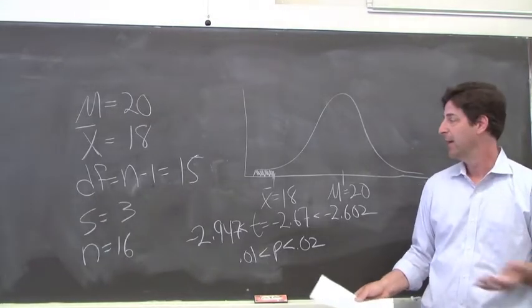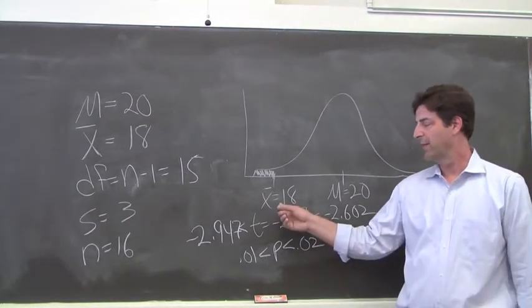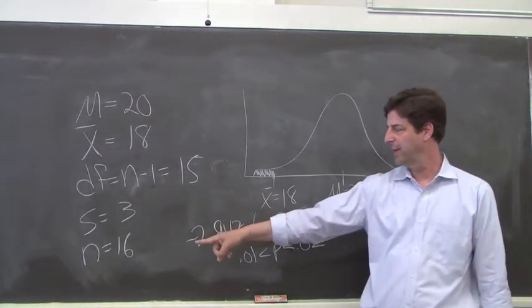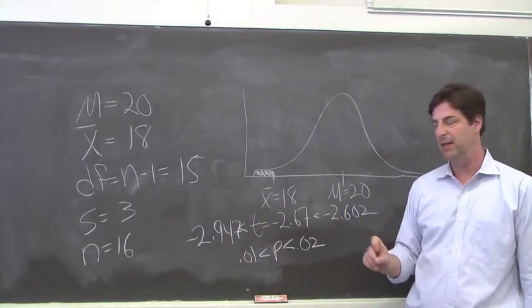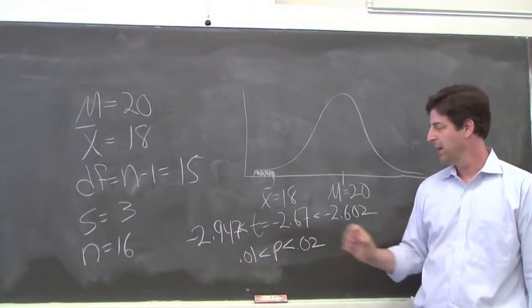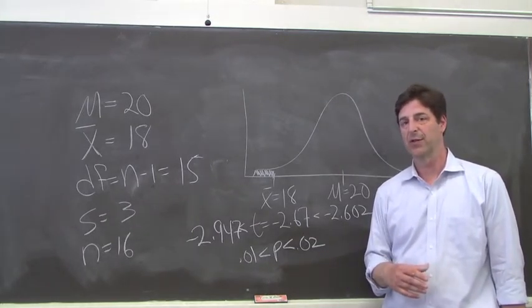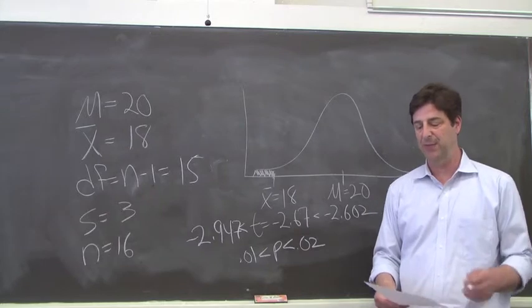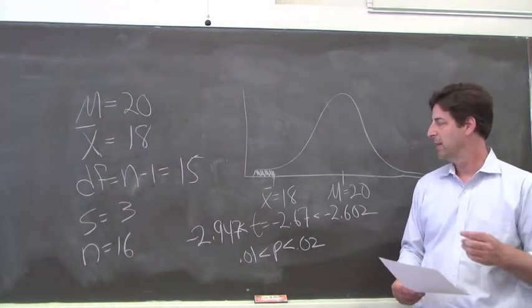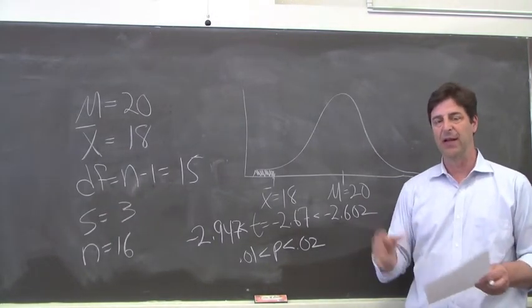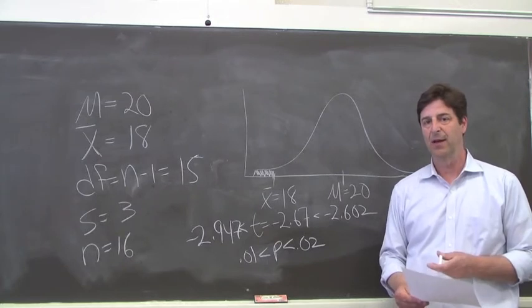The probability of randomly selecting a sample of 16 people that has a mean of 18 when the population mean is 20 is between 1% and 2%, closer to 2% than 1%. That's how you use Appendix B and t-values to find the probability of obtaining a sample mean by chance.